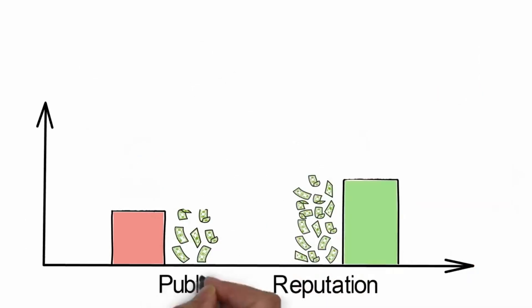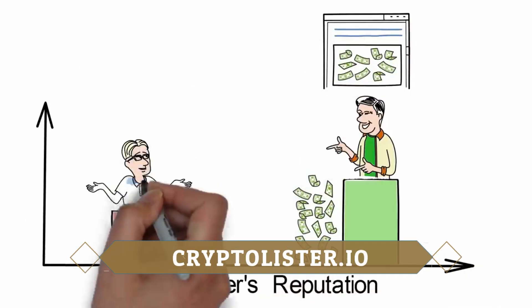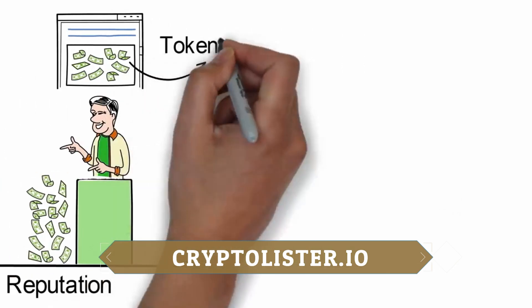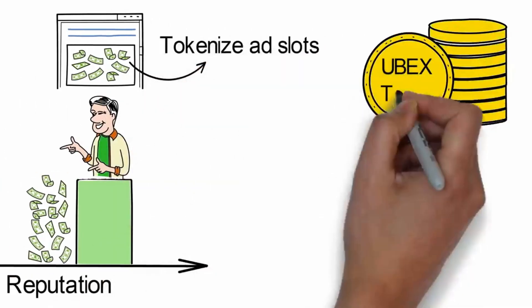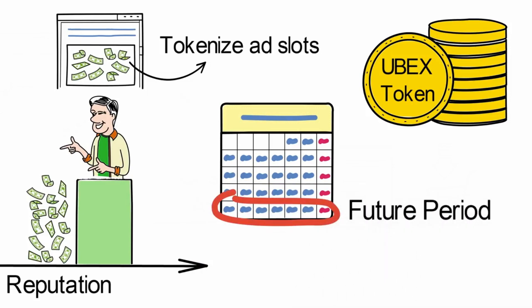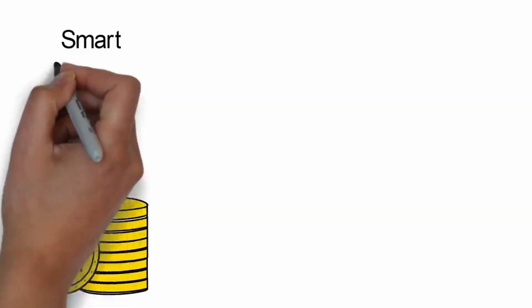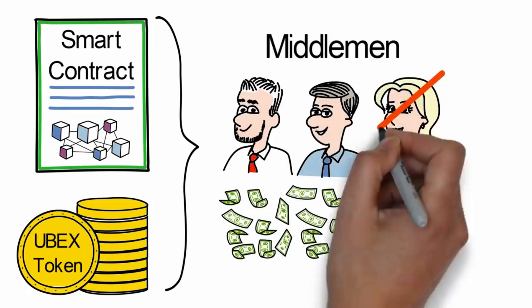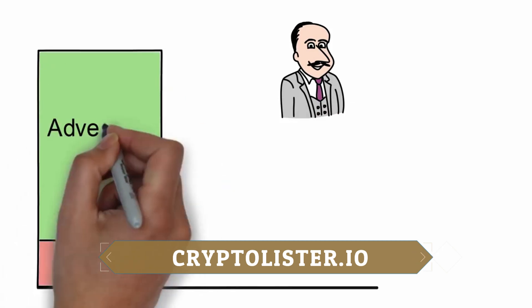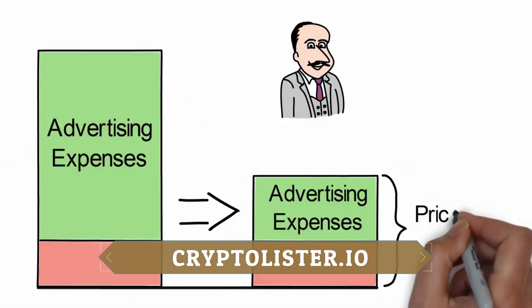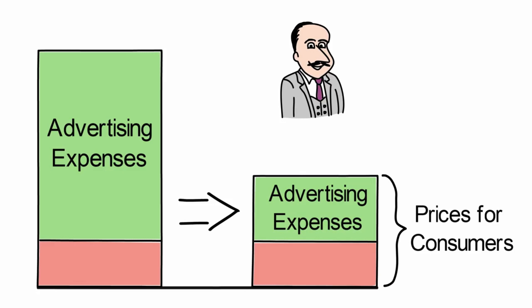If a publisher has a good reputation, their ad slots will be filled with the most profitable ads. On top of that, they will be able to productively tokenize their websites by receiving Ubex tokens in advance for future periods. Smart contracts and Ubex internal tokens will keep the middlemen and their fees out of the equation. Ultimately, advertisers reduce expenses associated with selling goods and services, and as a result, gain an opportunity to lower their prices.